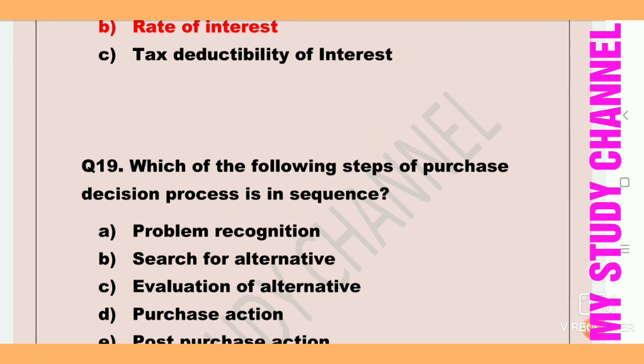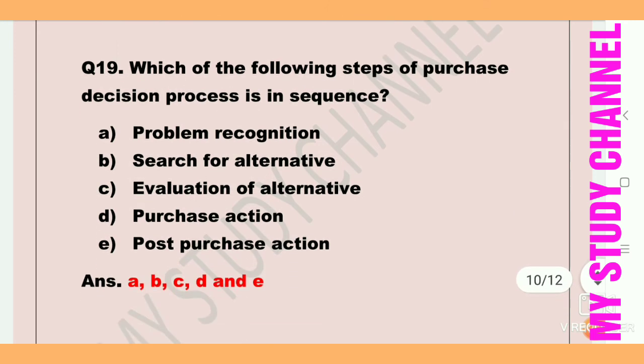Next question: which of the following steps of the purchase decision process is in sequence? Option A is the right answer — A, B, C, D, E are all in the correct sequence. First is problem recognition, then search for alternatives, then evaluation of alternatives, then purchase action, and finally post-purchase action.